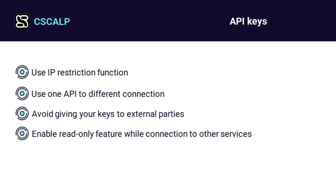IP restriction. You can set an IP limit in the API key settings by whitelisting trusted IP addresses. After that, it will only be possible to connect to the trading account through the keys from the IP addresses specified by you.